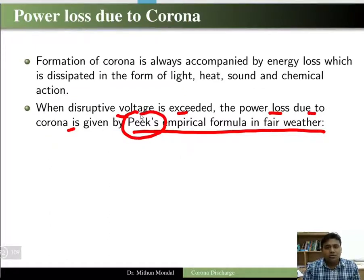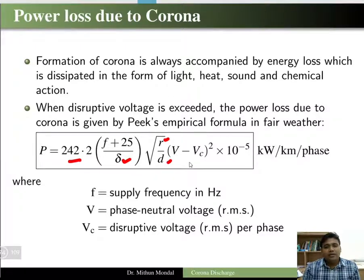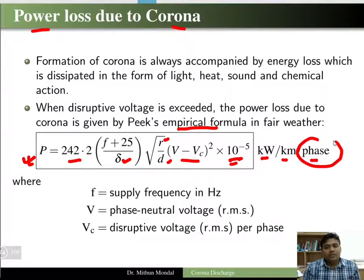Peek was a scientist who gave this empirical formula for power loss, given by: P = 242.2 × (f + 25) / δ × √(r/d) × (V − Vc)² × 10⁻⁵, where the unit is kilowatts per kilometer per phase.